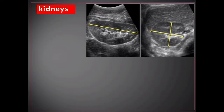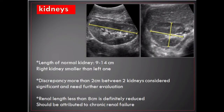Kidneys. Normal kidney size in adults varies with the height of the individual; in general it decreases with age and increases with body mass index. The size of the kidneys is measured mainly by ultrasound, although CT and MRI can also be used. The main average pole-to-pole length of an adult human kidney is between 9 and 12 centimeters. The left kidney is slightly longer than the right; a discrepancy of more than 2 centimeters between the two kidneys is considered significant and warrants further evaluation. Renal length less than 8 centimeters is definitely reduced and should be attributed to chronic renal failure.